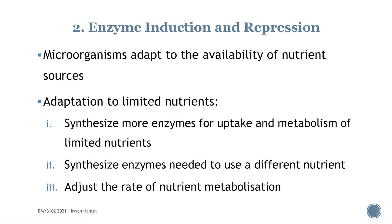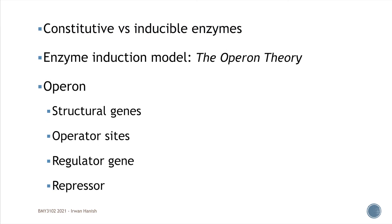Enzyme expressions are of different types. Focus on differentiating two: constitutive enzymes versus inducible enzymes. Constitutive enzymes are ones that microorganisms express constantly — for example, enzymes for the electron transport system or glucose consumption, which are needed all the time. Inducible enzymes, as the name implies, are only expressed when induced based on environmental changes. A popular example is the operon theory. An operon is a group of genes consisting of four components: structural genes, a regulatory or operator site, a regulator gene, and a repressor protein.